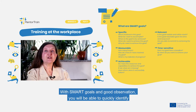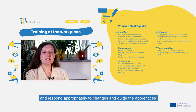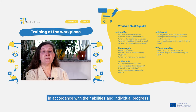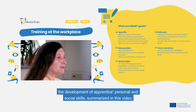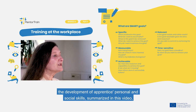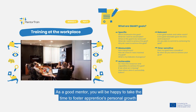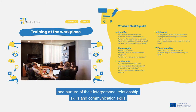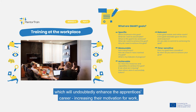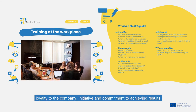Close observation will give you early recognition of these symptoms and will greatly assist you in successfully managing the apprenticeship process. With SMART goals and good observation, you will be able to quickly identify and respond appropriately to changes and guide the apprentices in accordance with their abilities and individual progress. Equally important is the development of apprentices' personal and social skills, which is also important for successful participation.